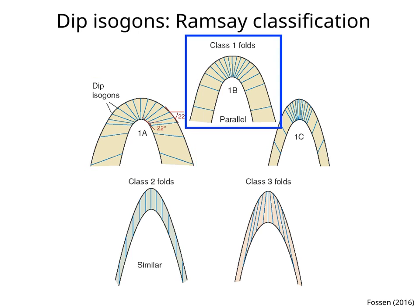Class 1B folds have moderately convergent dip isagons. The curvature of the outer arc is lower than the curvature of the inner arc. Isagons are perpendicular to the outer and inner arcs, and the true thickness remains constant throughout the fold. The vertical thickness is minimum at the hinge. These folds are called parallel or concentric folds.